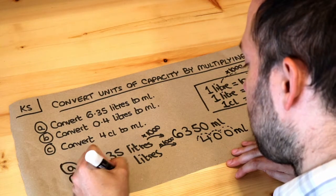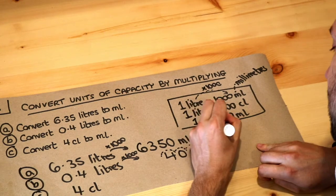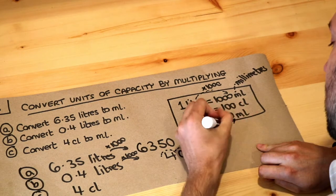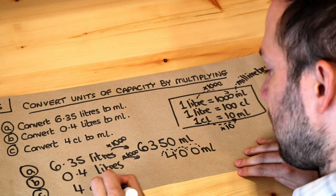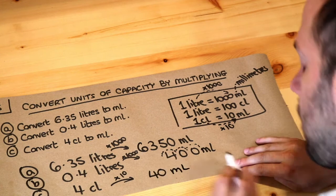Now finally, four centiliters, we're converting to milliliters. So to get from centiliters to milliliters, you can see the answer is getting ten times bigger. So we just need to times by ten, and that gives us 40 milliliters.